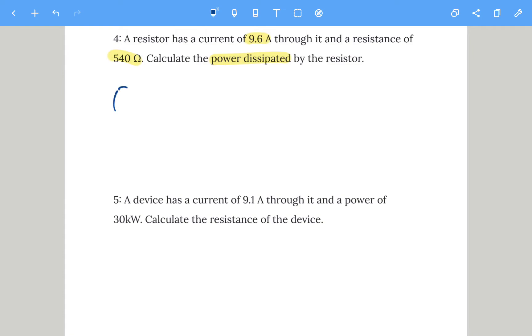So that's power equals current squared times the resistance. When you calculate, you just need to do 9.6 squared multiplied by 540. Do not square the entire thing. That gives us 49,766 watts. If you've written 50 kilowatts, that's fine if you've rounded it up to two significant figures.